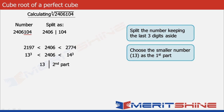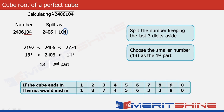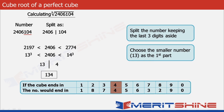The second part is very simple to obtain. If you look at the table below, you will see that for every possible unit digit in the cube there is a corresponding unique unit digit in the number. So if the cube ends in 1, then the number ends in 1; if it ends in 2, then 8; if 3, then 7, and so on. In our case the cube ends in 4, so as per the table the number must have 4 as its unit digit. Clubbing these two, we get our final answer as 134.